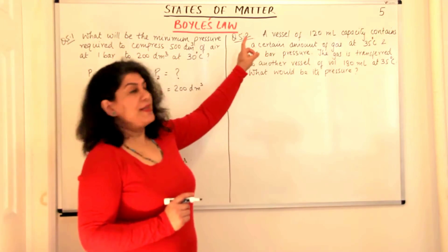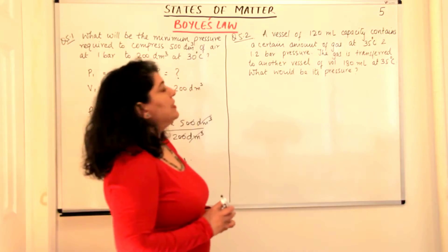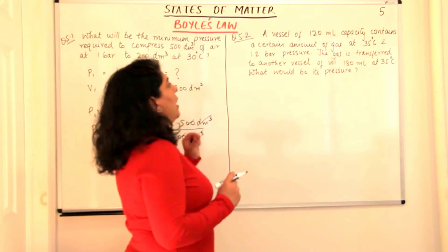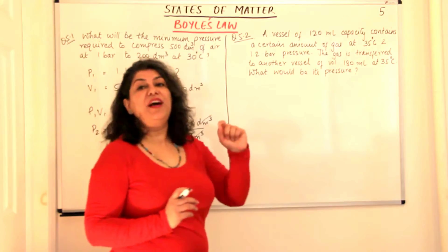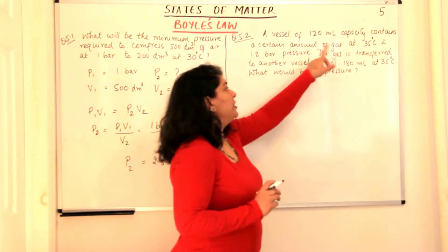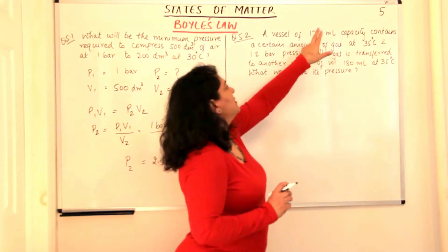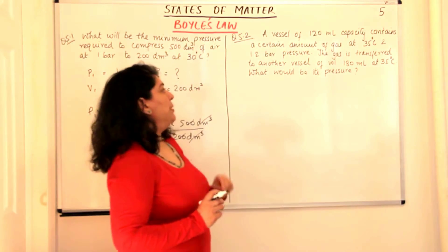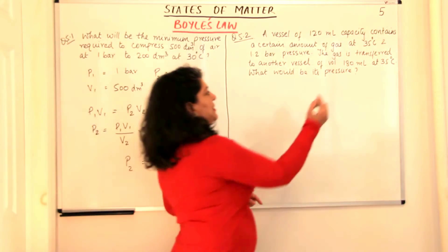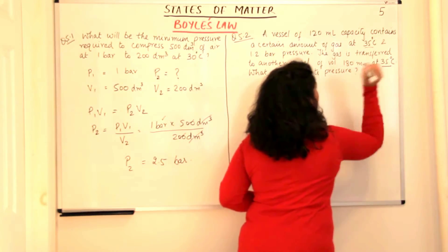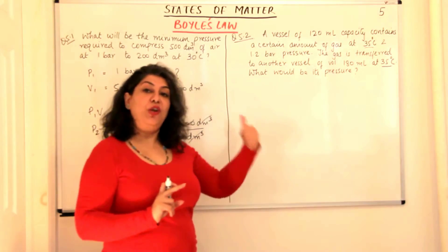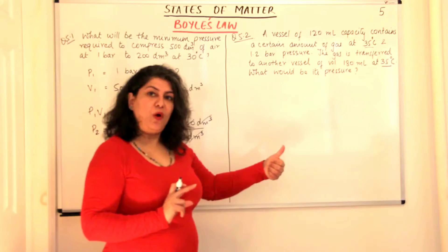Now this is question 2 of your NCRT exercise, question 5.2. The question reads: a vessel of 120 milliliter capacity contains a certain amount of gas at 35 degrees Celsius and 1.2 bar pressure. The gas is transferred to another vessel of volume 180 milliliters at 35 degrees Celsius. We notice the temperature is constant, and we have pressure and volume. So the applicable law is Boyle's law.